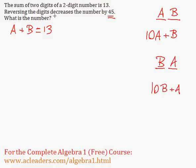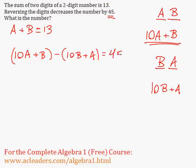So here we're saying that reversing the digits decreases the number by 45. This means that 10A plus B, our original number, minus 10B plus A is 45.